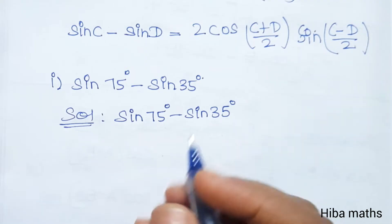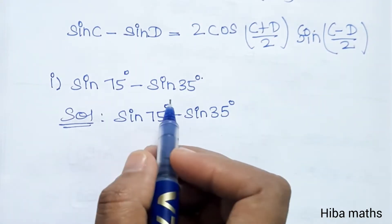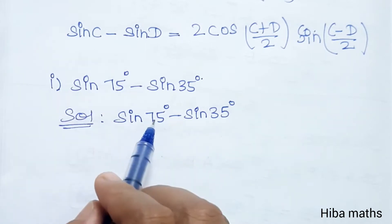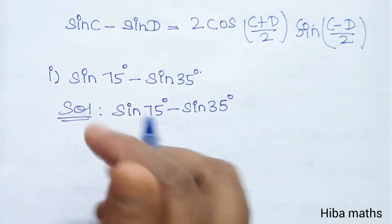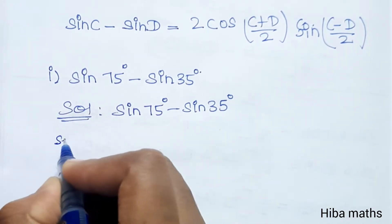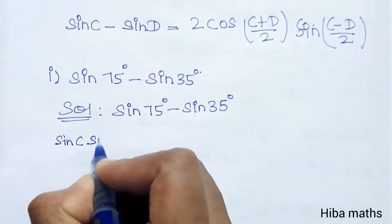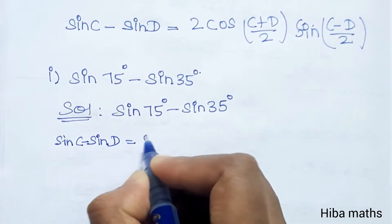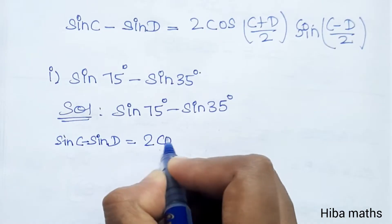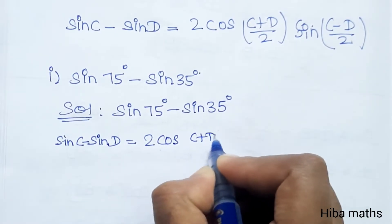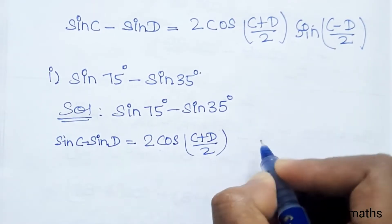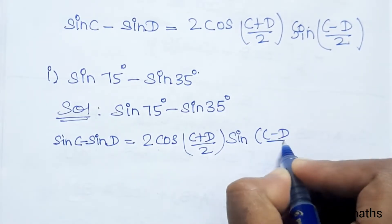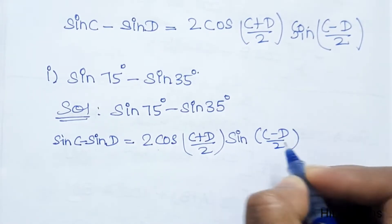First question: sin C minus sin D. Using the formula, sin C minus sin D is equal to 2 times cos((C+D)/2) times sin((C-D)/2).